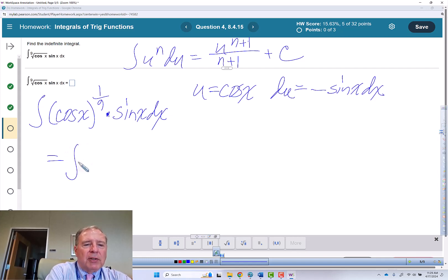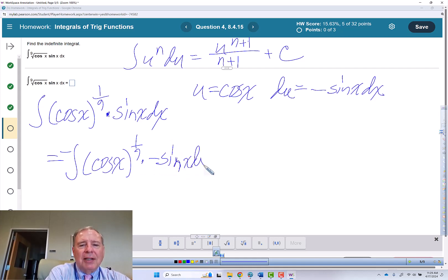The thing we're missing is a negative sign. So I'm going to put a negative sign out front, cosine of x to the 1 ninth power times negative sine of x dx. So this is now my u to the 1 ninth power, and this is du.